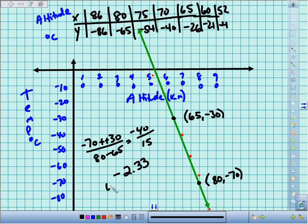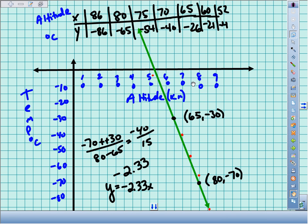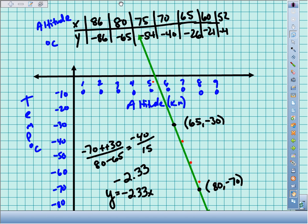So our equation: y equals negative 2.33x. Now we need the y-intercept. We're kind of in a bind on this one. Usually we like to just look and see, if we make a decent graph, where does it hit the y-axis? Well, the problem here is the y-axis is way up there and I can't even see it.